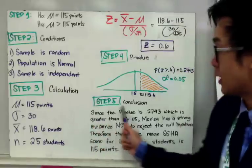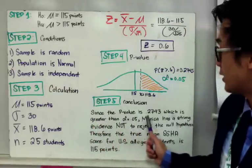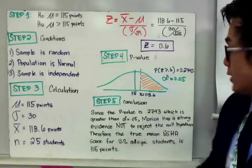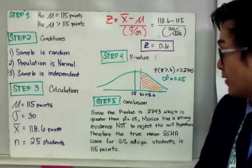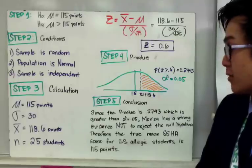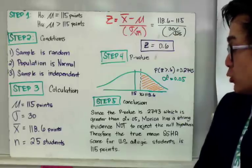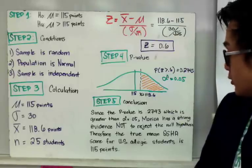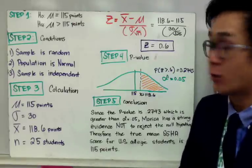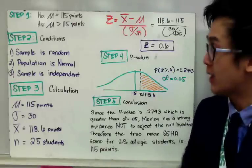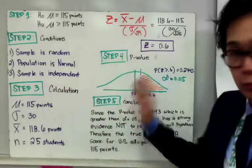Therefore, in step five, our conclusion is: since the p-value is 0.2743, which is greater than alpha of 0.05, there is not strong enough evidence to reject the null hypothesis. Therefore, the true mean SSHA score for US college students is indeed 115 points. That is how we conduct hypothesis testing based on our steps, our p-value, and writing your conclusion.